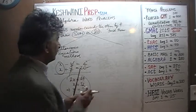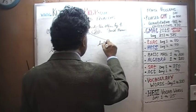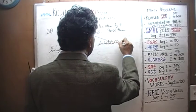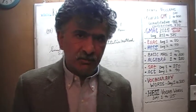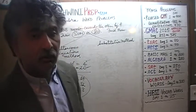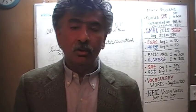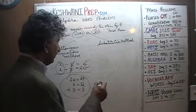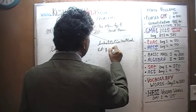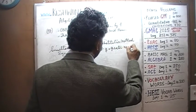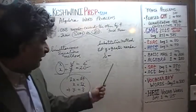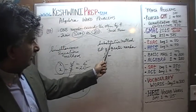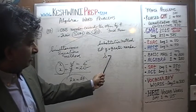Let's do the other method, which is called the substitution method. In the substitution method, we substitute one variable in terms of the other. It really doesn't matter which variable you use. We can do all our work in terms of the greater number or the smaller number. Let's define our variable: let G be the greater number. We're going to substitute one for the other.